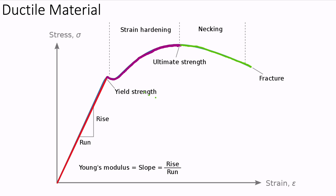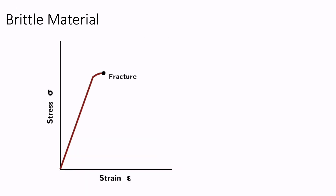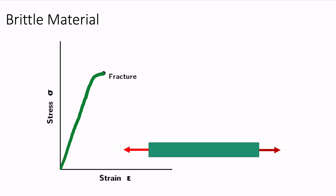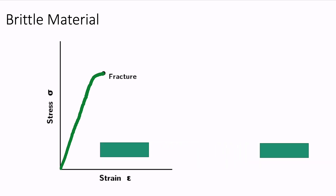After the yield point, a ductile material exhibits a high range of plastic deformation. If we plot the same curve for a brittle material, it will appear differently as you are seeing on this diagram — stress and strain increase simultaneously and fracture occurs suddenly without any plastic deformation of the material.